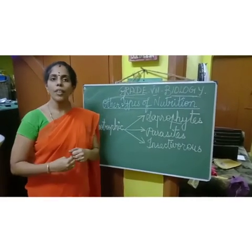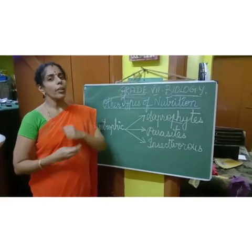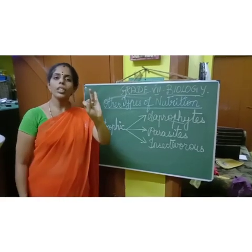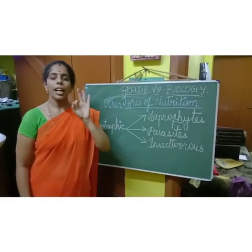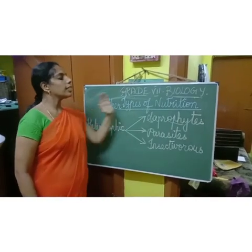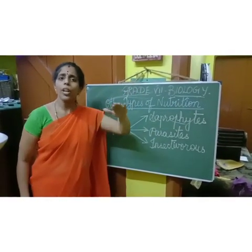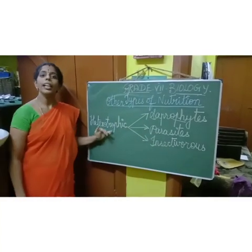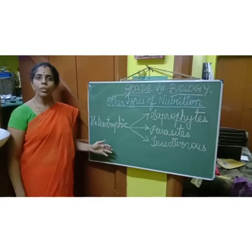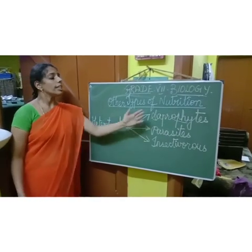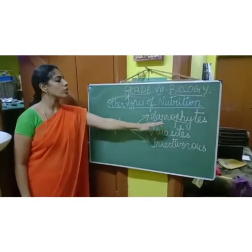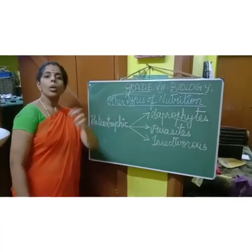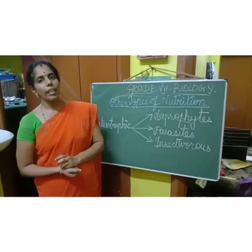So today's class — what we have seen: first, what other nutrients are required by the plants for its growth; second, the structure of the cell; and third, the other types of nutrition. So far we have completed autotrophic nutrition and started heterotrophic nutrition. Under heterotrophic nutrition, the different types are saprophytic nutrition, parasitic nutrition, and insectivorous plants. About this, we will be dealing in our next class.